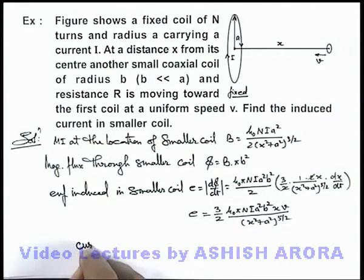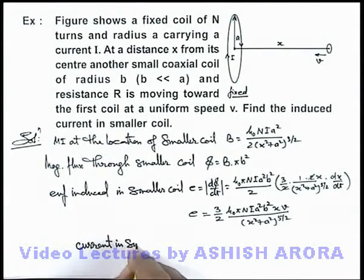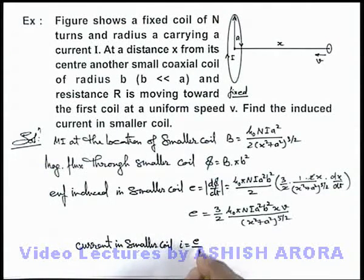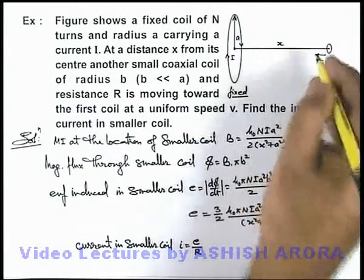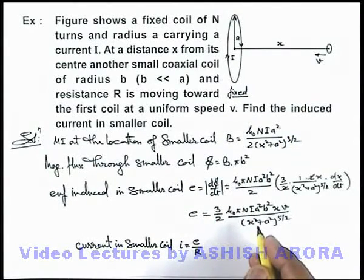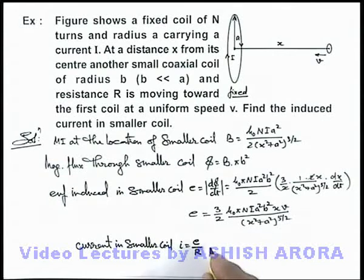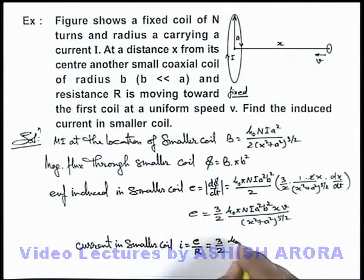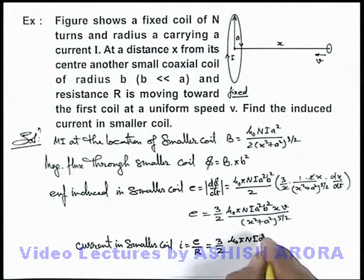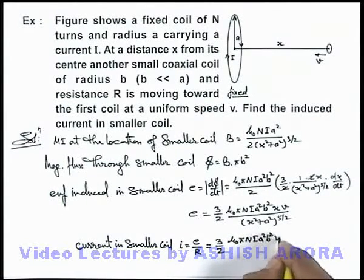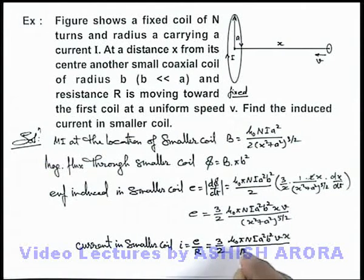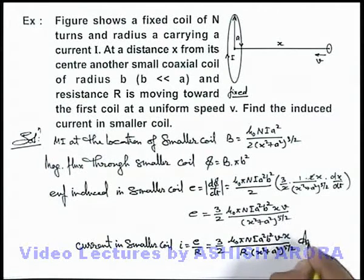Directly now, we can write the current in the smaller coil as i = ε/R, as it is the total loop EMF in the coil due to variation in magnetic field. On substituting the values, we are getting it as i = (3/2)μ₀π·N·I·a²·b²·v·x divided by R(x² + a²)^(5/2). That will be the answer to this problem.